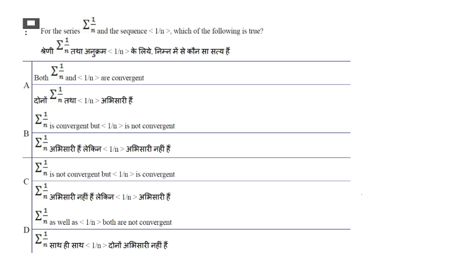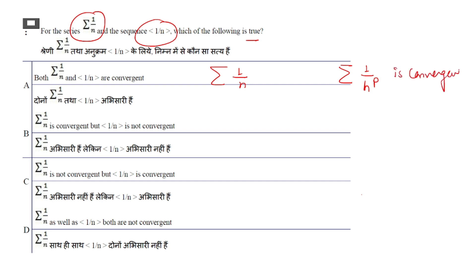Next question: for the series Σ1/n and sequence {1/n}, which of the following is true? We know by the p-series test that 1/n^p is convergent if p > 1 and divergent if p ≤ 1. Here p = 1, so the series Σ1/n is divergent.